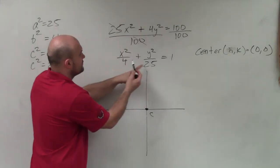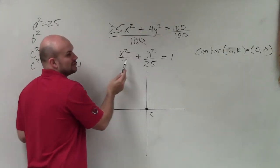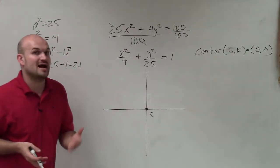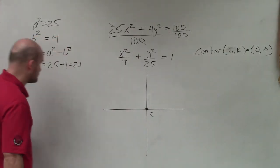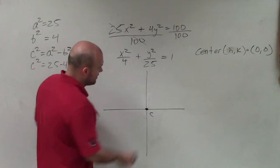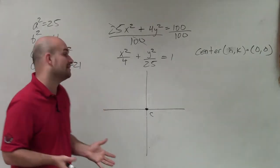If these 25 and 4 were swapped, then my major axis would be horizontal, because it would be under the x. So therefore, now I know my major axis is vertical.